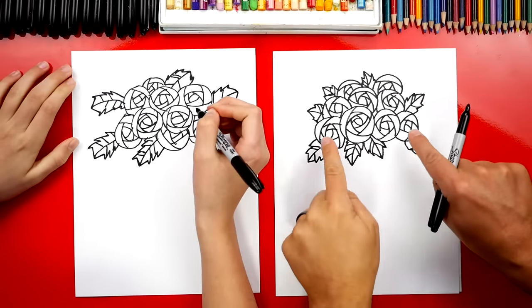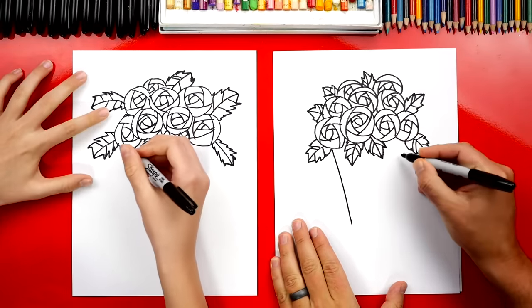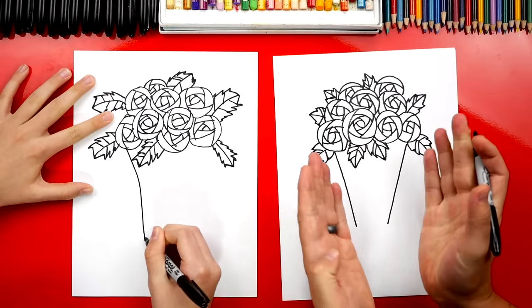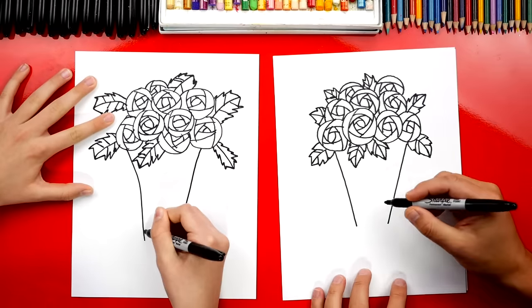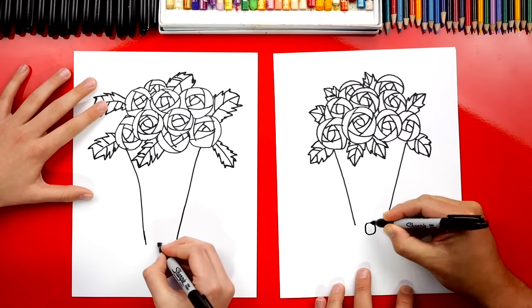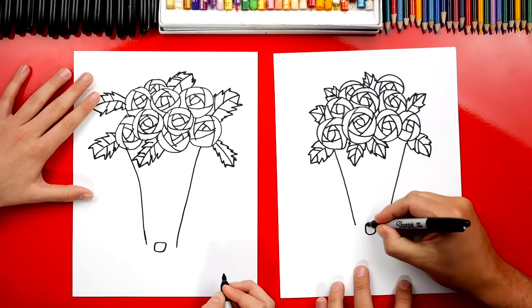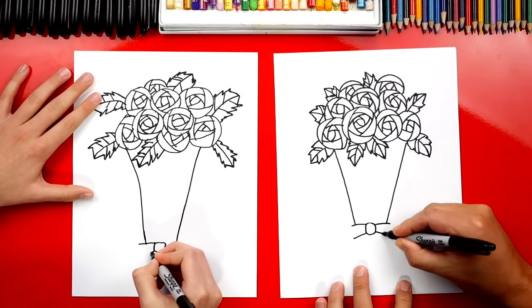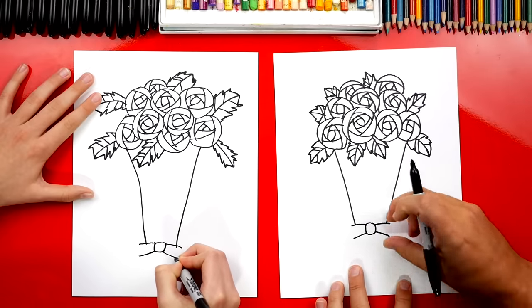Now we're ready to draw the wrapper that's holding all of our roses together. We're gonna draw a line on each side that comes down and then they get closer together or taper towards the bottom. Then let's add a bow down here at the bottom. I'm first going to draw a circle or kind of a rectangle or a square shape and then we can draw two lines that come out from each side of that. This is the knot for a bow. We went past the wrapper.